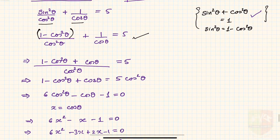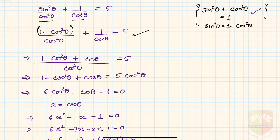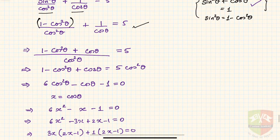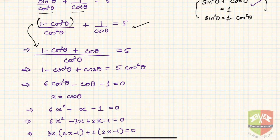Taking the LCM of the denominators, we get cos²θ. Simplifying, we get (1 - cos²θ + cosθ)/cos²θ = 5. This becomes 1 - cos²θ + cosθ = 5cos²θ.